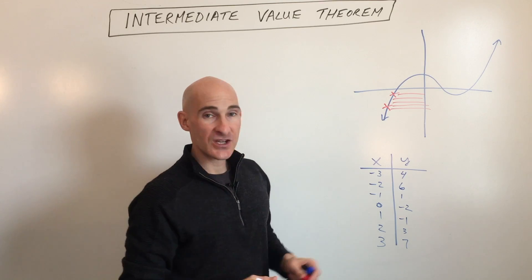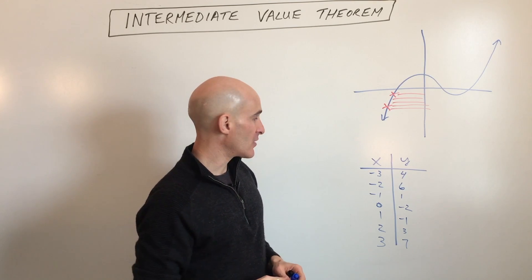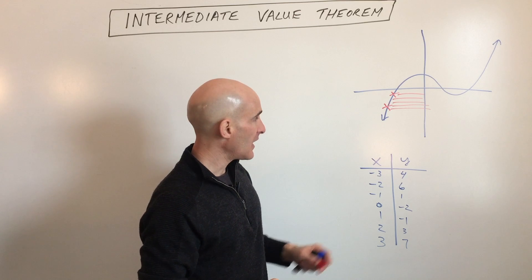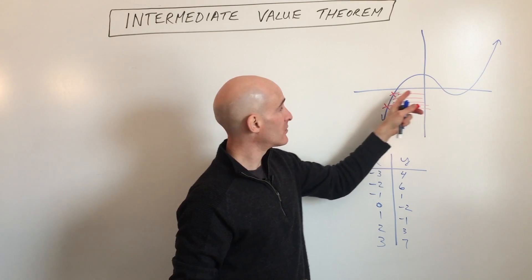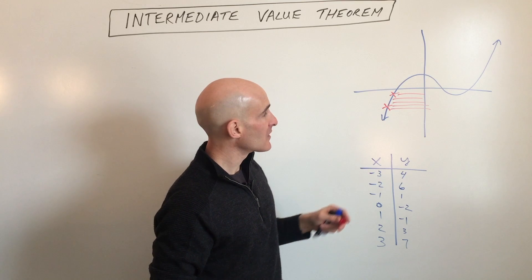But the application, how we use Intermediate Value Theorem when we're working with polynomials and finding zeros - zeros are where the graph crosses the X axis.